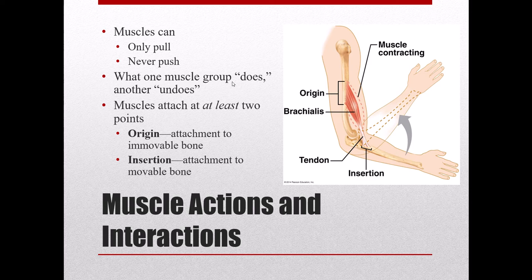One attachment point is the origin and the other is the insertion. The origin is the immovable point; the insertion is on the movable bone. When a particular muscle contracts, it pulls on its insertion from its origin, and the insertion moves closer to the origin. For example, the brachialis originates proximally and inserts distally; when it contracts, the insertion moves closer to the origin and the forearm flexes.